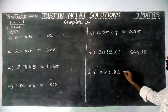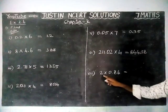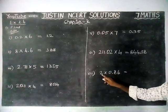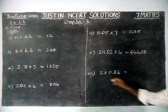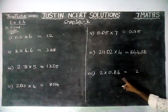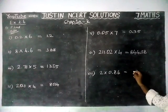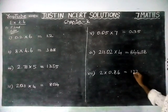And now seventh question, 2 into 0.86. We have to multiply. 6 times 2 is 12, remaining 1. 8 times 2 is 16. 16 plus 1 is equal to 17.